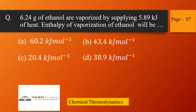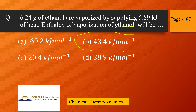Next, from chemical thermodynamics, page 87. This is a numerical: 6.24 grams of ethanol are vaporized by supplying 5.89 kilojoules of heat. The enthalpy of vaporization of ethanol will be — the molecular weight of ethanol is 46. So 6.24 grams corresponds to 5.89 kJ, and 46 grams corresponds to 43.4 kilojoules per mole. This is the correct answer.